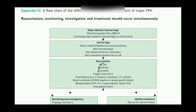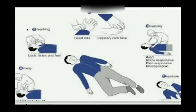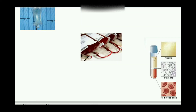Next we address the resuscitation situation, which includes Airway, Breathing, and Circulation. Oxygen by mask at 15 liters is given and fluid balance is also very important. A is for airway, B for breathing, C for circulation, D is for disability, and E is for exposure. ABC is the first step in the resuscitation program.